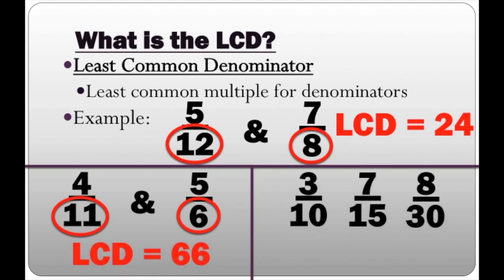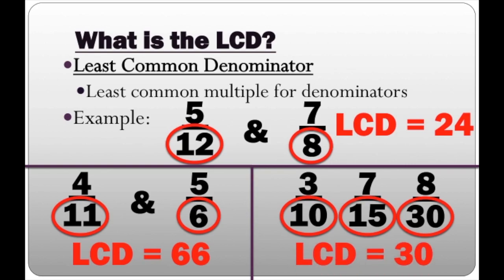And how about when we have three fractions with three different denominators? Same exact thing — we just have to find the least common multiple for 10, 15, and 30. And what's the least common multiple for 10, 15, and 30? Since the least common multiple is 30, that makes the LCD 30.